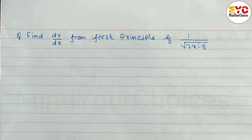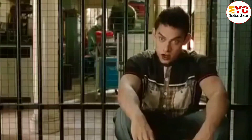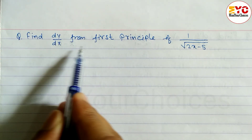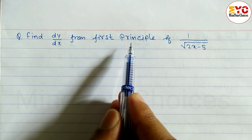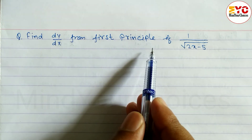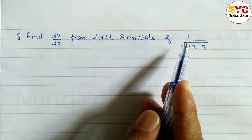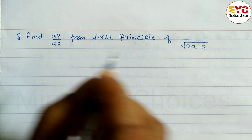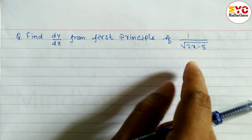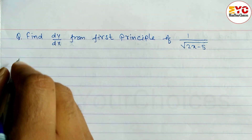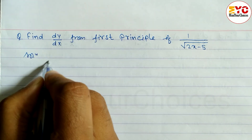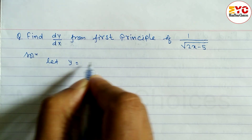Your question: find dy/dx. This is Class 11 Business Mathematics. You can see here the question: find dy/dx by the first principle, or by using the definition. The question is: y = 1 divided by root under (2x minus 5). We have to find dy/dx by using the first principle. Let's take a start. Let y be equal to 1 over root(2x - 5).